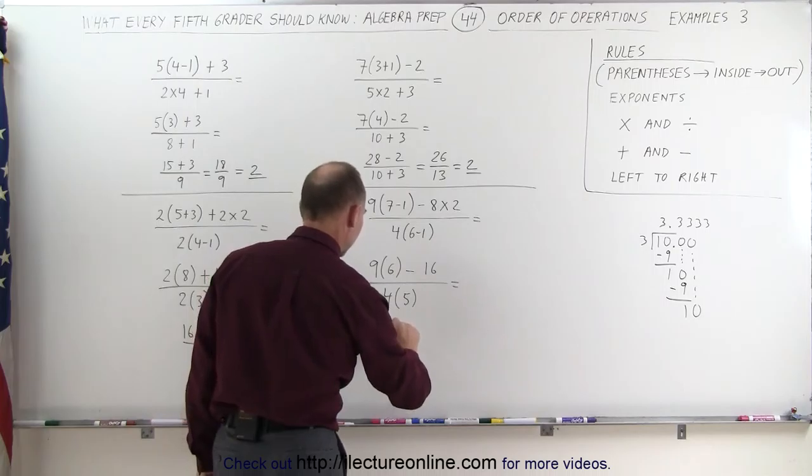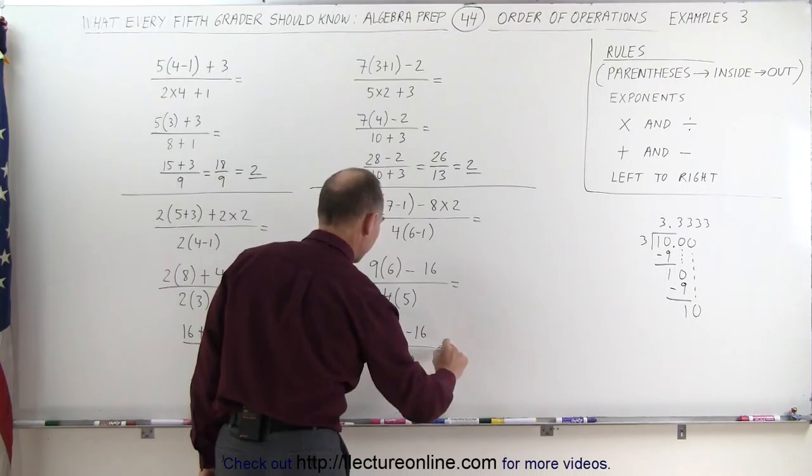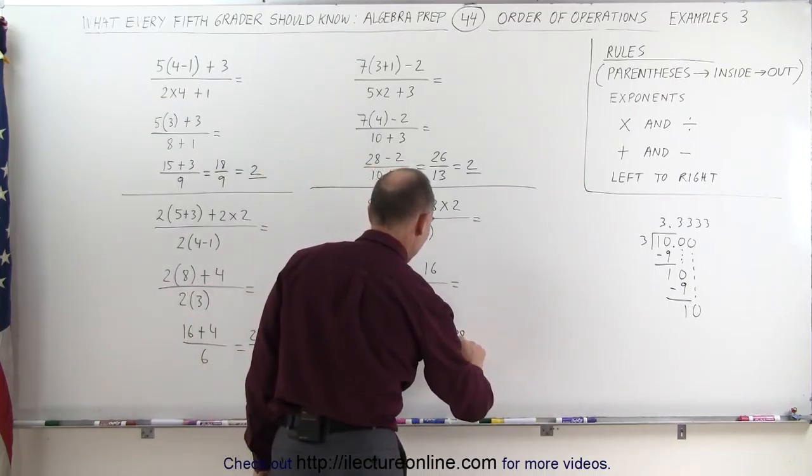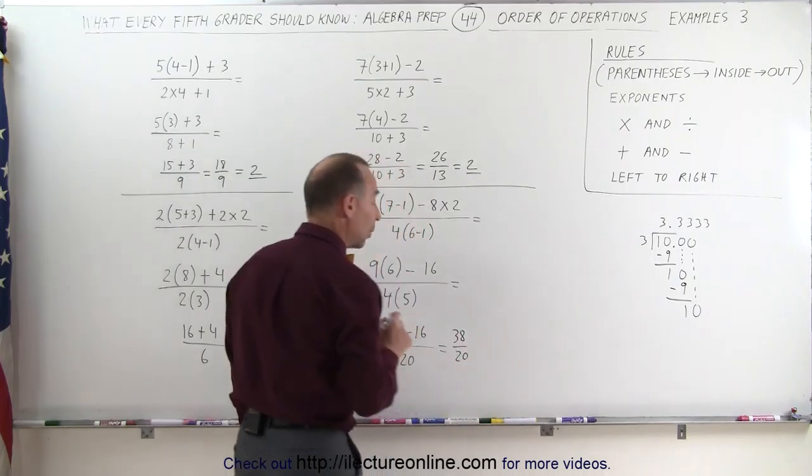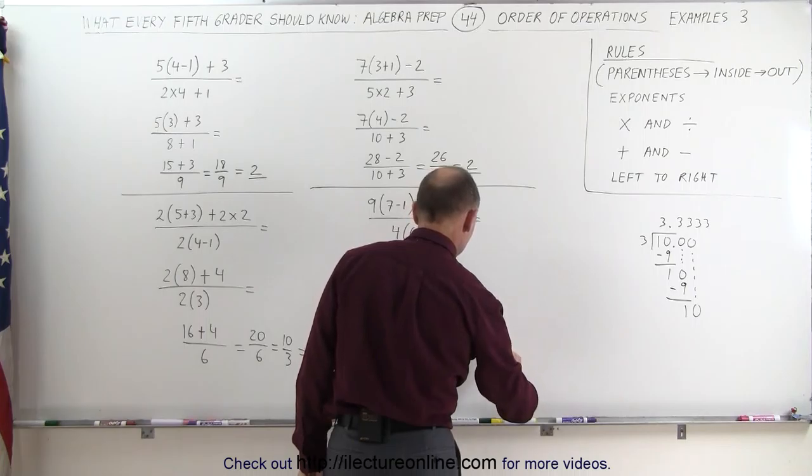Next, we can do the multiplications, 9 times 6, that's 54, minus 16, divided by 4 times 5, which is 20. 54 minus 16, that would be 38, divided by 20, they're both even, so I can simplify that, this becomes 19 divided by 10.